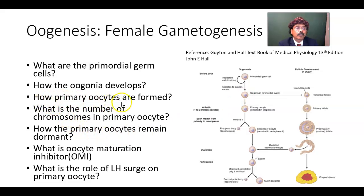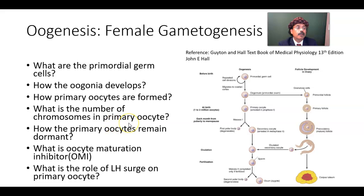Primary oocytes are formed from oogonium by replication of DNA. In the primary oocyte we have 46 chromosomes and 4n DNA.